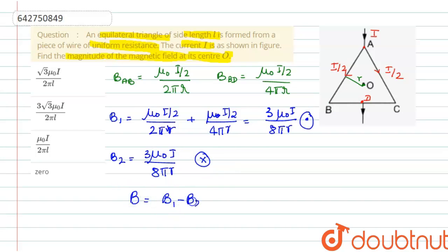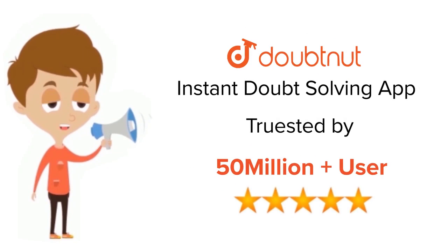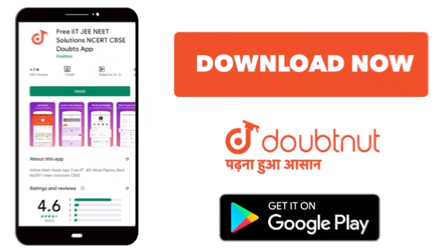And hence we have the total magnetic field B is equal to B1 minus B2, which is equal to zero. Hence option D is the correct answer. For class 6 to 12, IIT-JEE and NEET level, trusted by more than 5 crore students. Download Doubtnet app today.